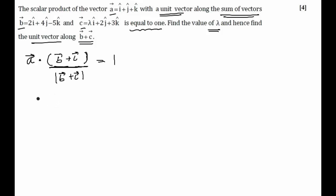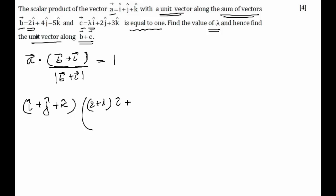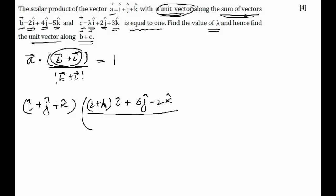So, what is A vector? A vector is î plus ĵ plus k̂. B plus C vector will become: 2i plus lambda·i, which is (2 + lambda)î, then 4j plus 2j which is 6ĵ, and then minus 5k plus 3k which is minus 2k̂. I then have to divide by the magnitude: under root of (2 + lambda)² + 6² + 4, which equals under root of (2 + lambda)² + 40. This value should equal 1.